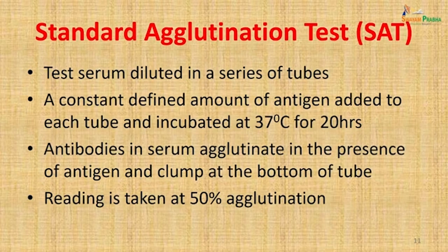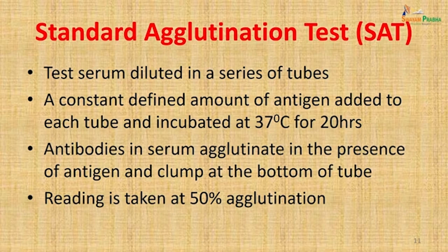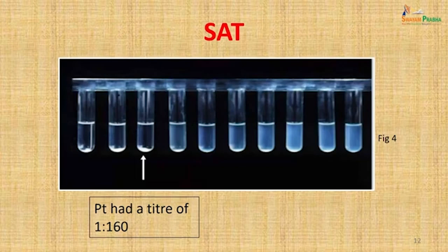The standard agglutination test was done. Test serum was diluted in a series of tubes; a constant defined amount of antigen was added to each tube and incubated at 37°C for 20 hours. Antibodies in the serum agglutinated in the presence of antigen and clumped at the bottom of the tube. The reading was taken at 50 percent agglutination. This particular patient had a titer of 1:160, which was the last tube giving agglutination.